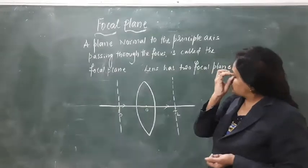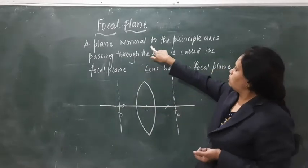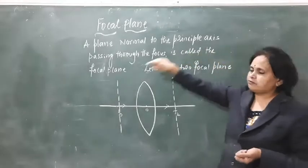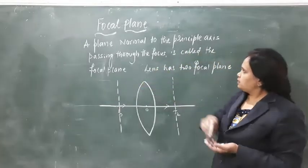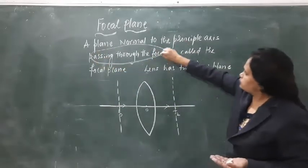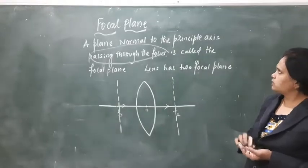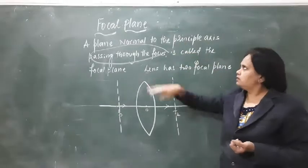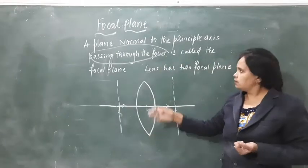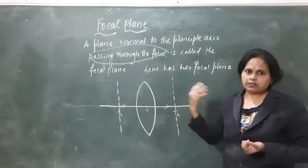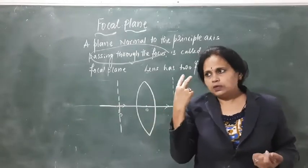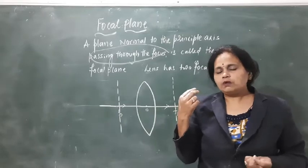See the definition on the board: a plane normal to the principal axis passing through the focus is called the focal plane. Here, what you have to stress on is 'passing through the focus.' A plane normal to the principal axis passing through the focus is called the focal plane, and a lens has two focal planes — obviously if it has two focal points, it definitely has two focal planes.